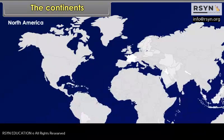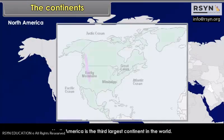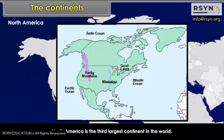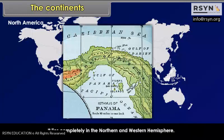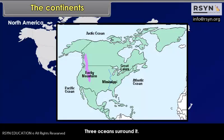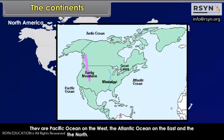North America is the third-largest continent in the world. It is linked with South America by the Panama Isthmus. It lies completely in the northern and western hemisphere. Three oceans surround it: the Pacific Ocean on the west, the Atlantic Ocean on the east, and the Arctic Ocean on the north.